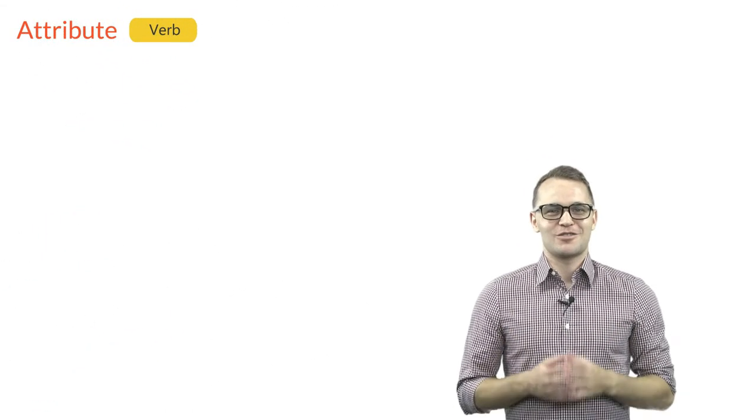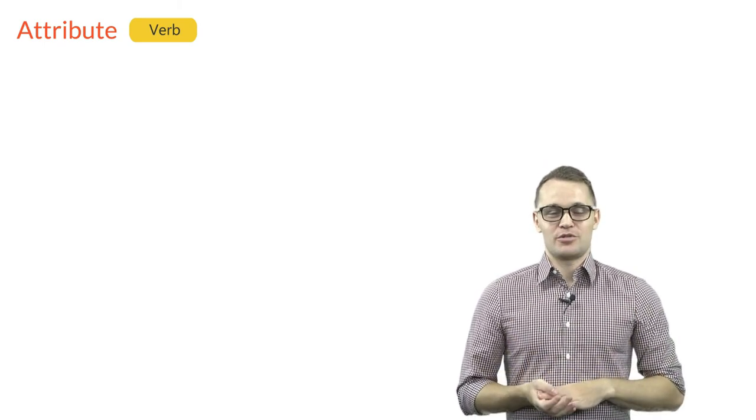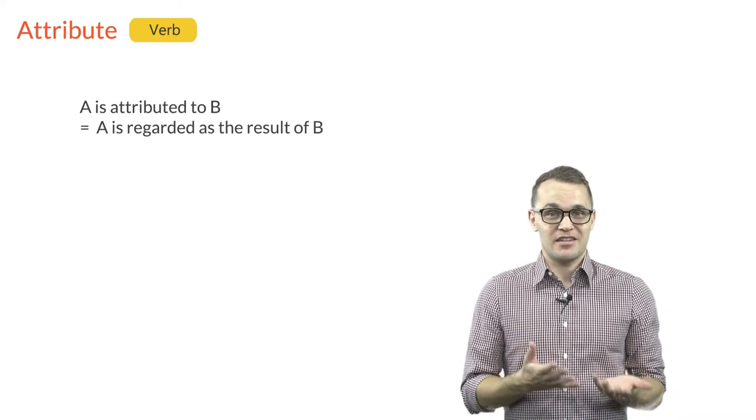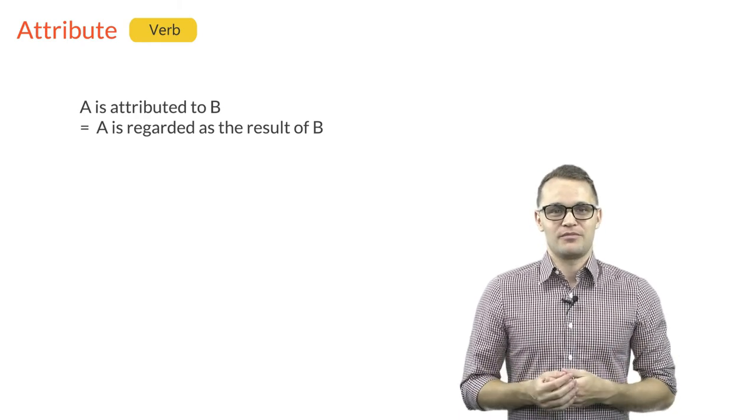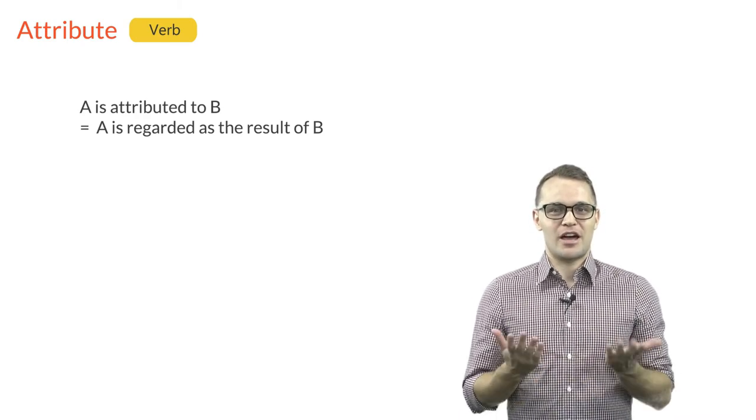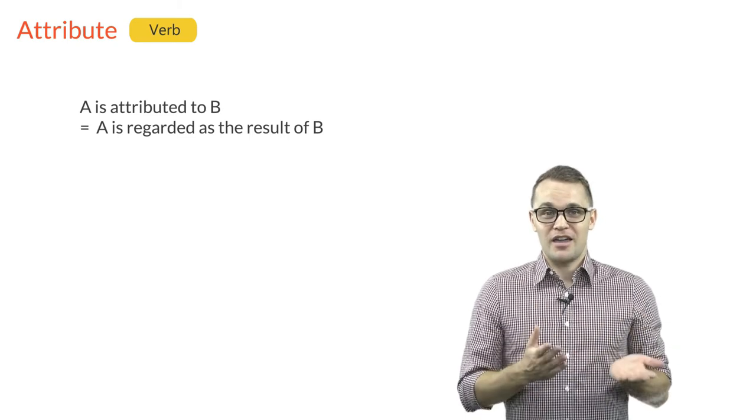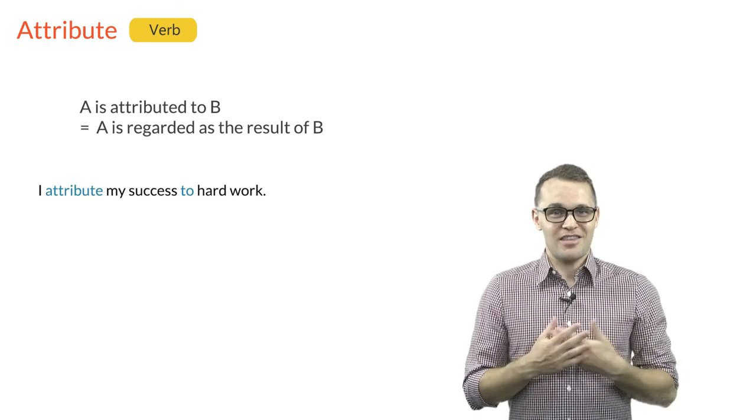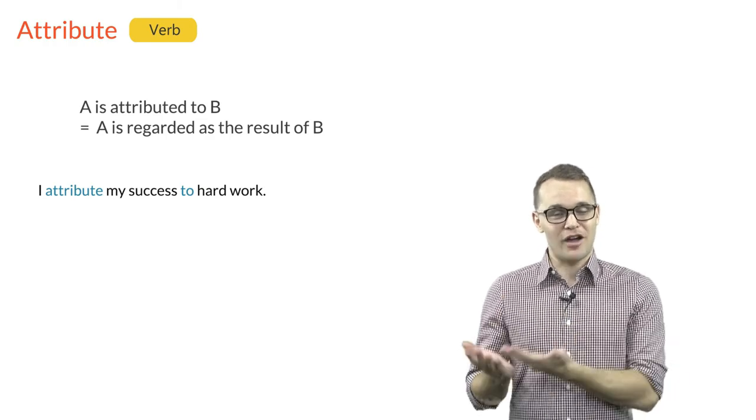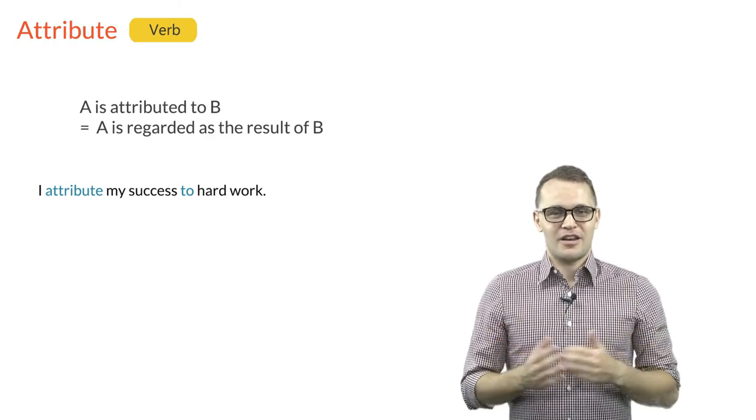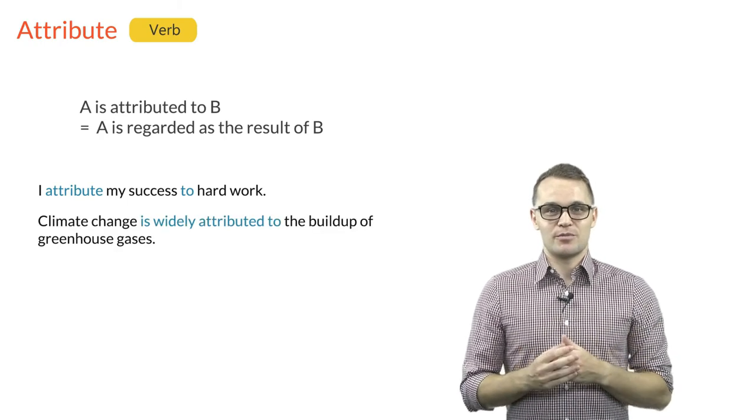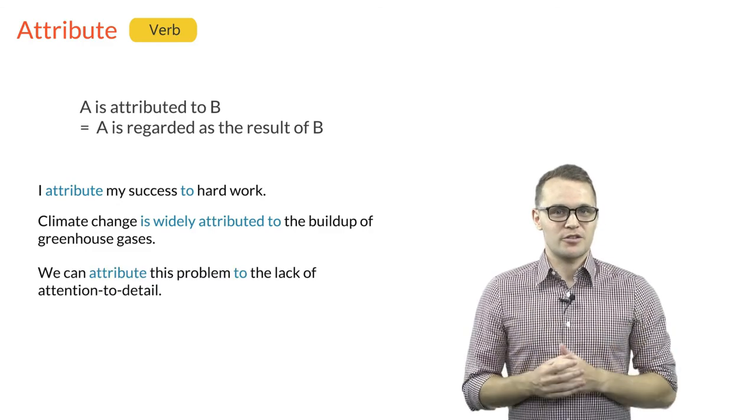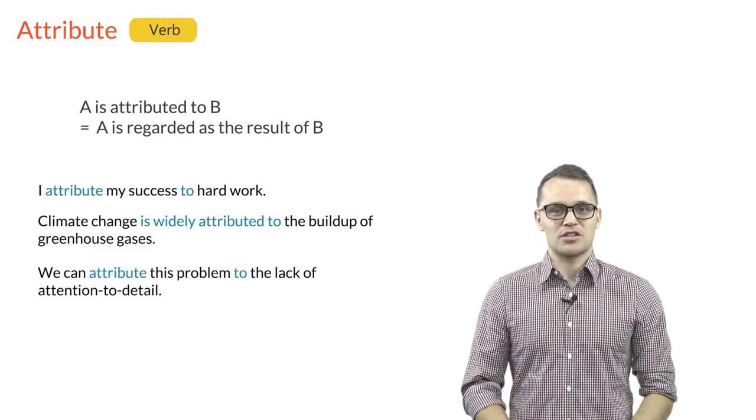So let's look at our final word today, the verb attribute. So when you say A is attributed to B, it means that A is regarded as the result of B. The examples below demonstrate how to use the word. I attribute my success to hard work. This sentence would mean that I think my success is a result of hard work. And other examples would be, climate change is widely attributed to the build up of greenhouse gases. Or we can attribute this problem to the lack of attention to detail.